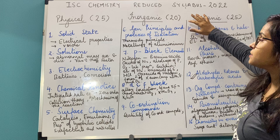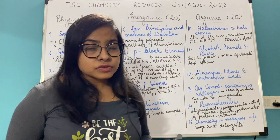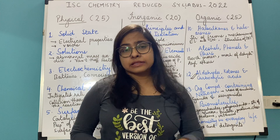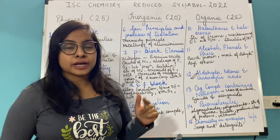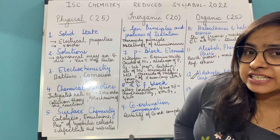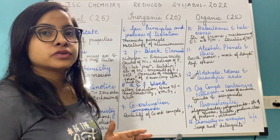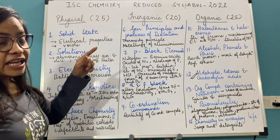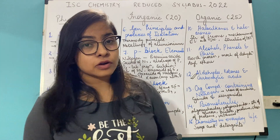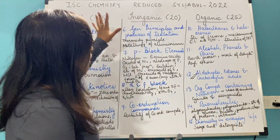Coming to chemistry now, you already know the bifurcation of marks: Physical Chemistry for 25 marks, Inorganic for 20 marks, and Organic again for 25 marks. There are certain portions which the council has reduced. The reduction is quite similar to what was done in the previous year's exam conducted in 2021. I will tell you precisely and specifically what has been reduced from each chapter. We will first cover Physical Chemistry, then Inorganic, and finally Organic.